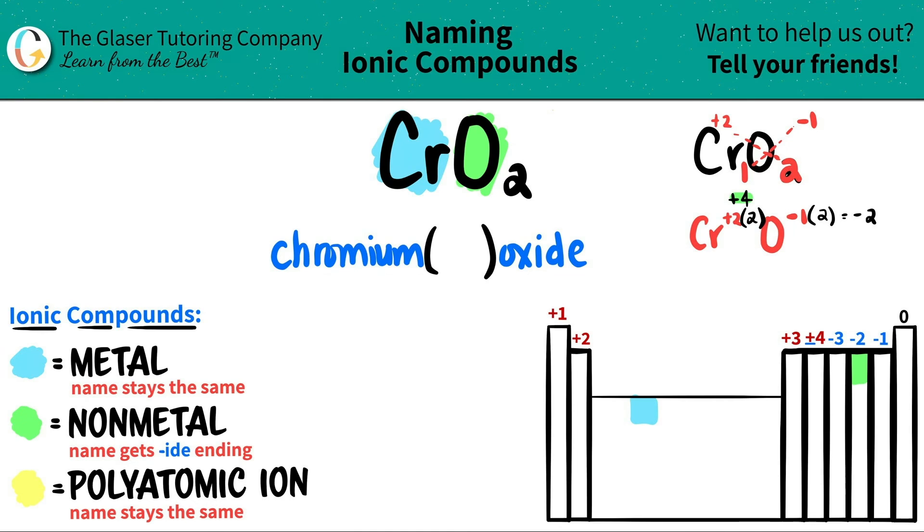So I'm going to put a four Roman numeral here, which is like an IV. And finally, you are done. So CrO2 is chromium four oxide.